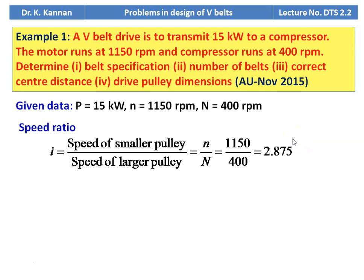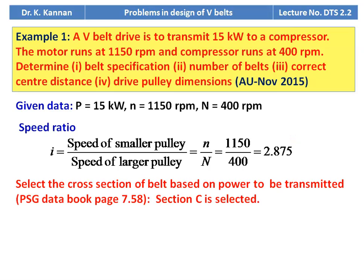First step: calculate the speed ratio. Speed ratio = speed of the smaller pulley divided by speed of the larger pulley = 1150 divided by 400 = 2.875. Next, select the cross section of the belt based on the power to be transmitted, referring to page number 7.58. We select section C for this particular power output.